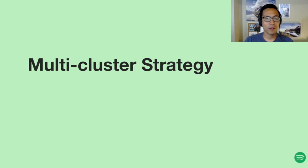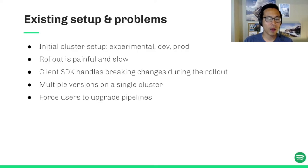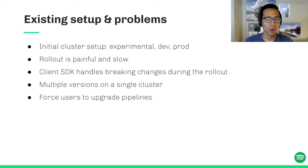Another topic is our new Kubeflow multi-cluster strategy. Since the landscape of ML is evolving so fast and we are constantly dealing with infrastructure upgrades as well as the breaking changes coming with them, our initial platform setup consisted of three clusters: an experimental cluster for internal infrastructure prototyping and testing, a prod cluster for production pipelines and ad hoc ML workloads, and a dev cluster for platform developers that also serves as a backup when the prod is under upgrade or maintenance. This setup made rolling out a new version of Kubeflow painful and slow — we'd first test it on the experimental cluster, then apply changes to dev and wait for users to upgrade before rolling to prod. The process usually took weeks to complete.